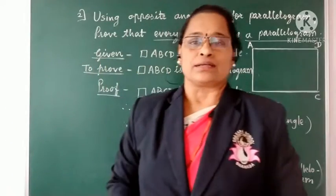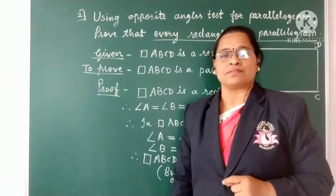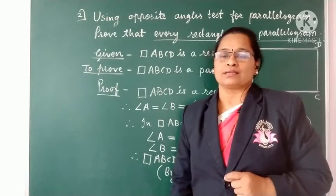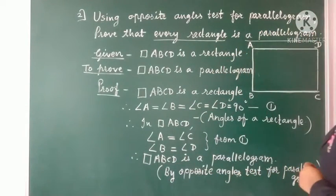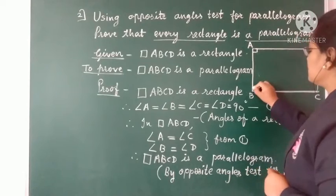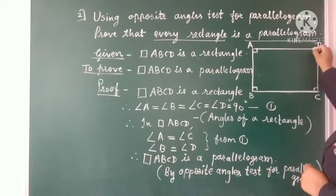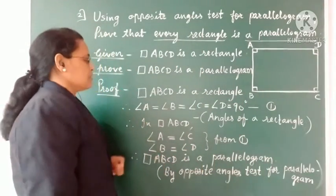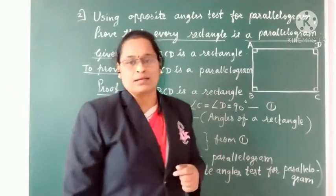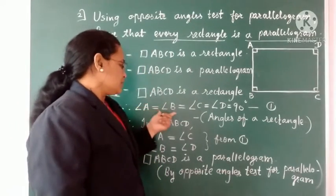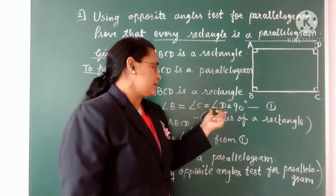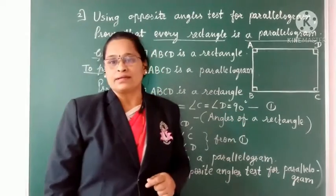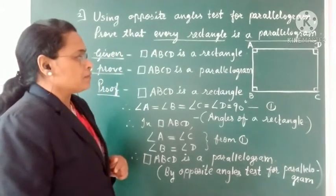Whenever we say rectangle, the main property is regarding the angles. Each angle of a rectangle is a right angle of 90 degrees. So we mark angle A = 90°, angle B = 90°, angle C = 90°, and angle D = 90°. We start with the given: quadrilateral ABCD is a rectangle, so angle A = angle B = angle C = angle D = 90°.